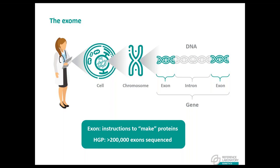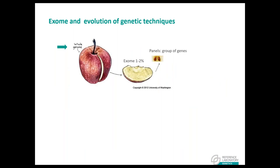Let's explain the same concept using an apple as an example. The whole apple, as you can see in the picture, represents what we call the genome — the whole human genome with coding and non-coding intronic regions. Reference laboratory offers genome tests as well. The exome would be a slice representing one to two percent of the genome, covering all protein-coding regions. You can also see the seeds as part of the fruit, which represent a group of genes, or panels — genes selected by us.